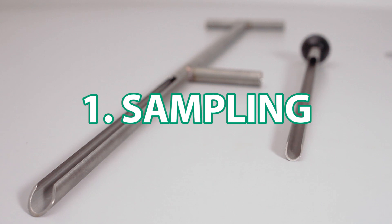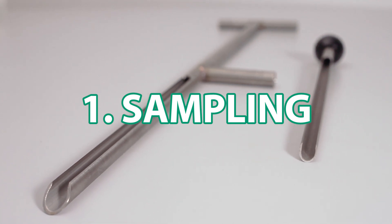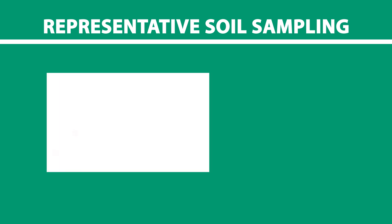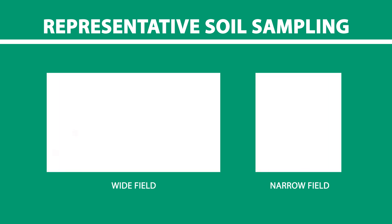The first step is to take a representative sample using a soil sampler. A representative sample reflects the whole ground area. This is necessary for the precise analysis of nutrients. Representative sampling can be performed by taking several samples in a W pattern across a wider field or in a diagonal pattern across a more narrow field.